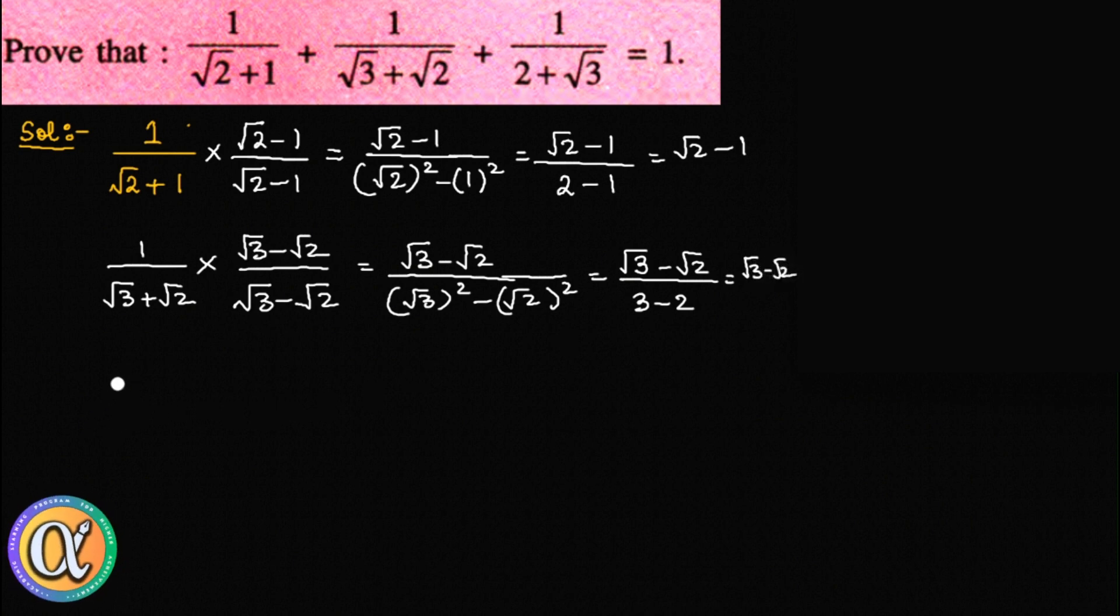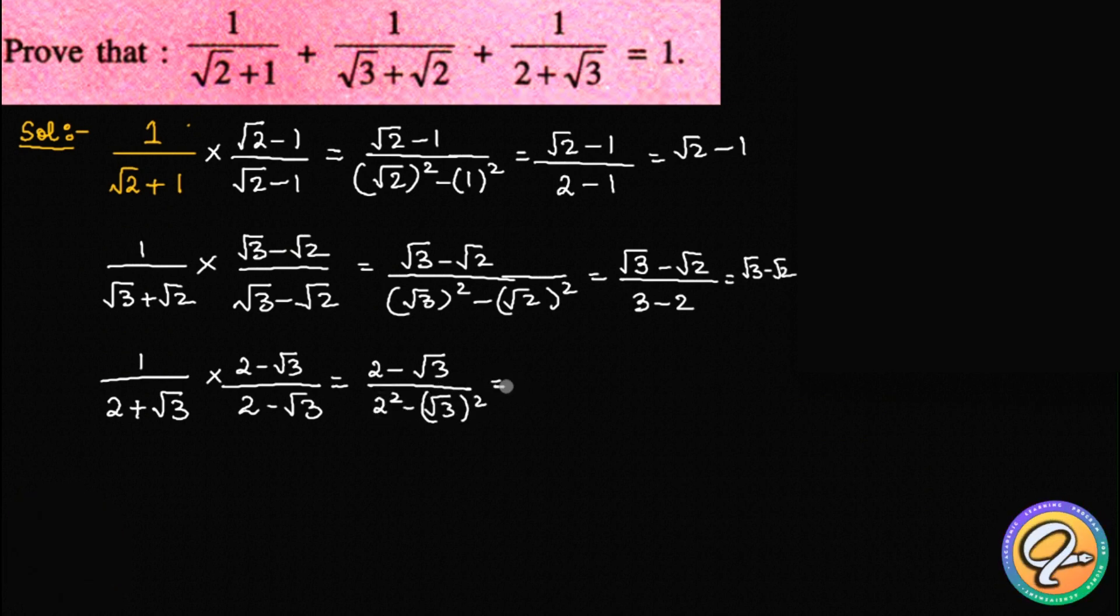The third answer. Then two minus root 3 square, then two square minus root 3 square. 2 minus root 3. Four minus three is 2 minus root 3. Okay, very good.